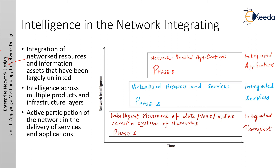The second feature is intelligence across multiple products and infrastructure layers — the intelligence built into each component of the network is extended network-wide and applied end-to-end. Third is active participation of the network in the delivery of services. With added intelligence, it is possible for the network to actively manage, monitor, and optimize services and application delivery across the entire IT environment. The intelligent network offers end-to-end functionality and centralized unified control that promotes true business transparency and agility.